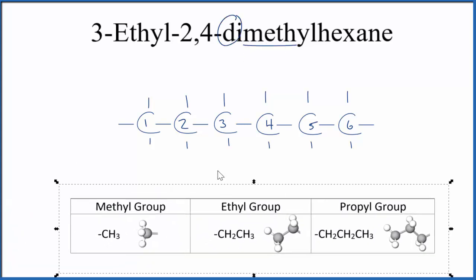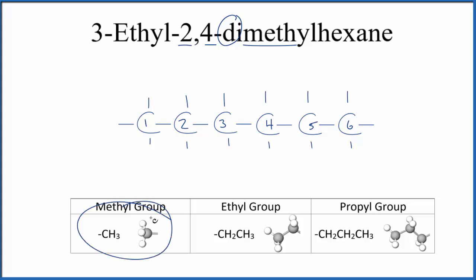And methyl groups right here, that's a CH3. So on the second and the fourth of these carbons, we're going to have our methyl group.